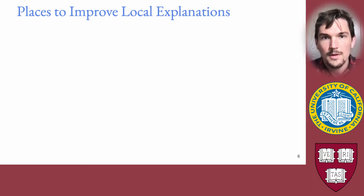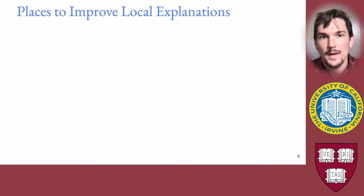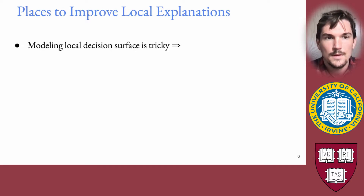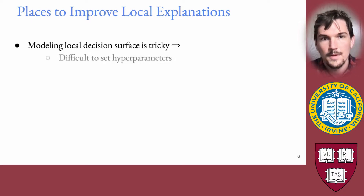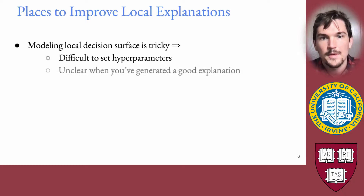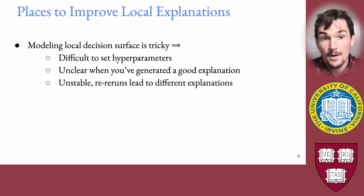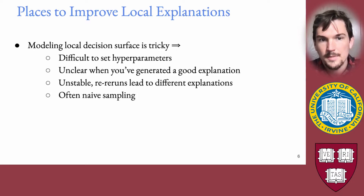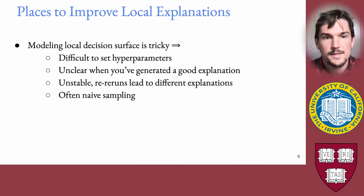Although local explanations can reveal key insights into models, there are a number of drawbacks. Modeling the local decision surface is an inherently difficult problem, and many of these methods have difficult-to-set hyperparameters. It can be unclear when you've generated a good explanation — they're often unstable, and reruns lead to different explanations. Sometimes they also don't sample perturbations in the smartest way.